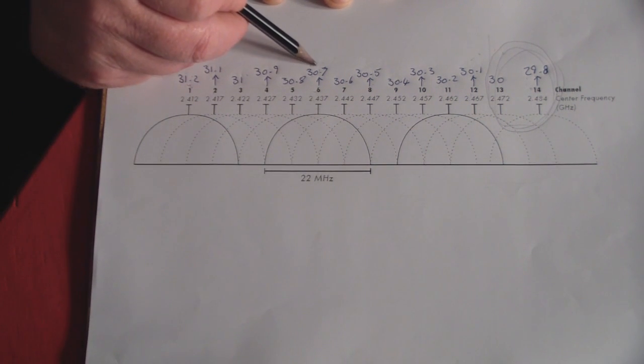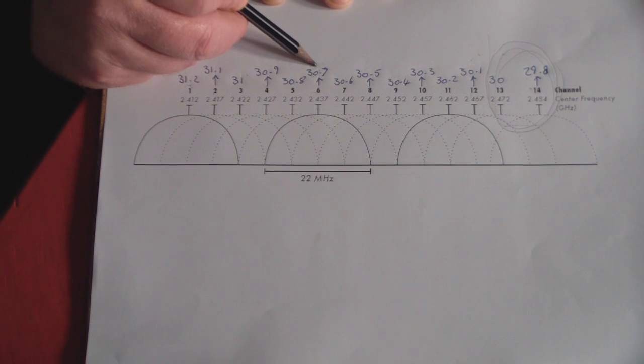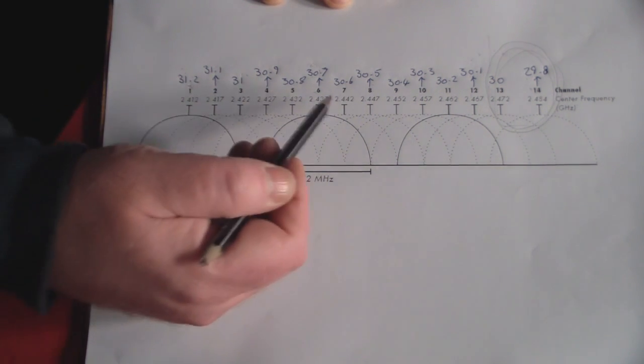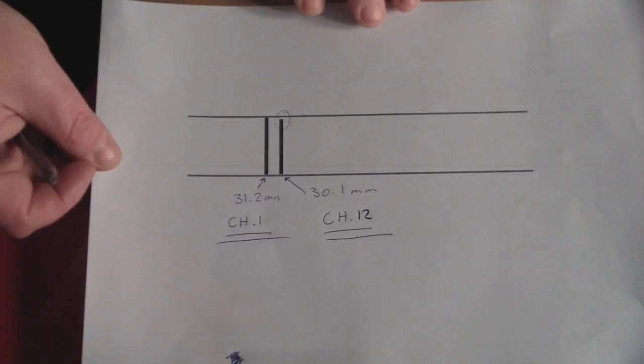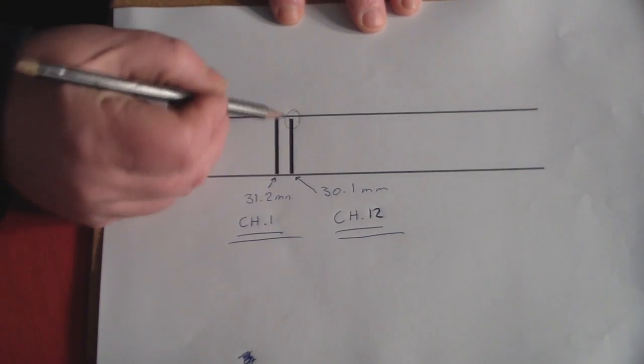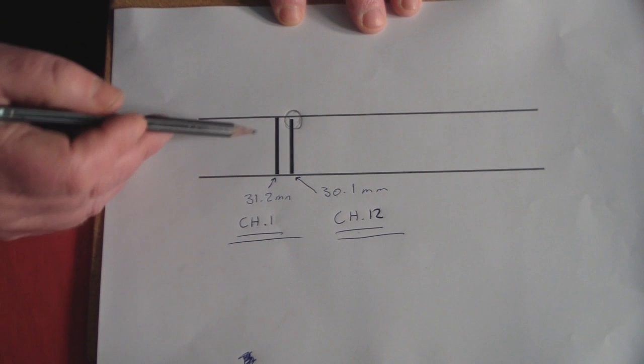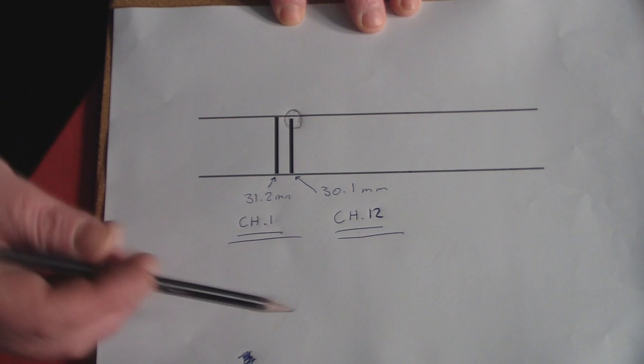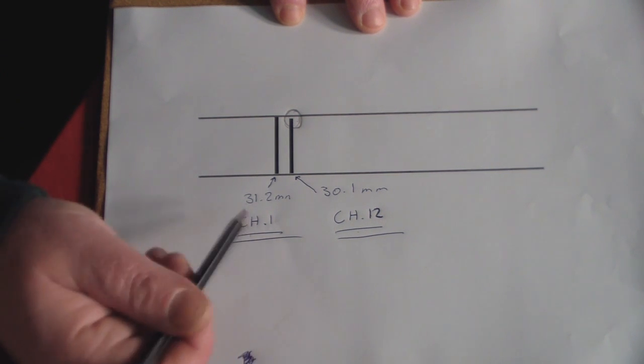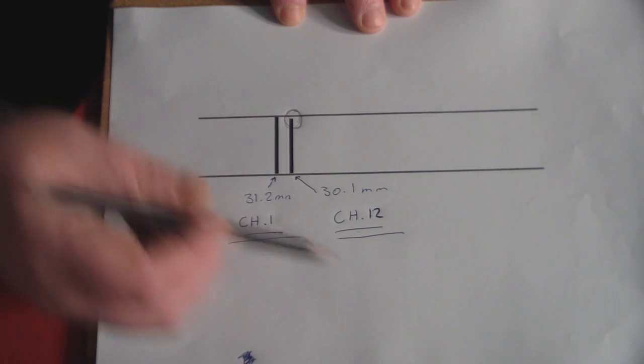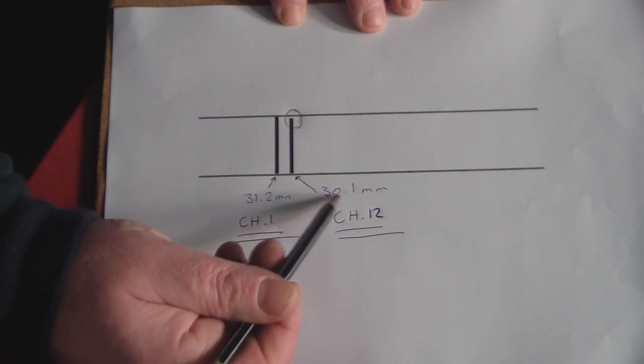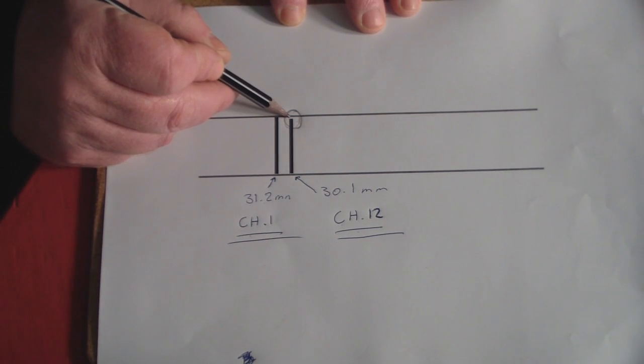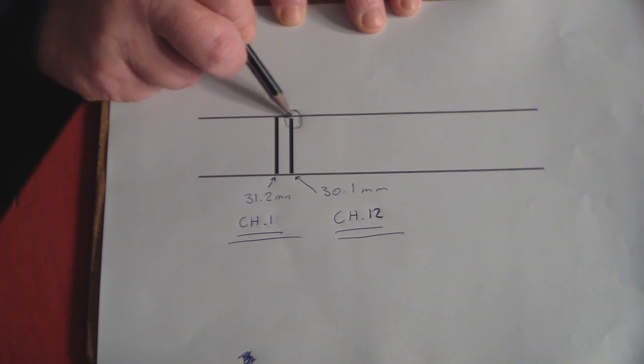And if we have a look here, the driven element to be tuned exactly to channel 6 needs to be 30.7mm in length. To put that into perspective, I have here a representation of two measurements for two driven elements. One driven element here is exactly tuned to channel 1, which is 31.2mm. This one here is on channel 12, 30.1mm, and that little bit there is a difference between them both.